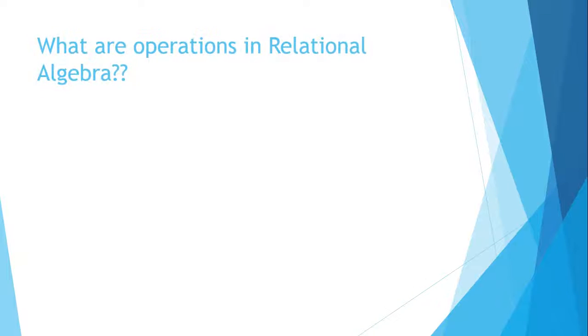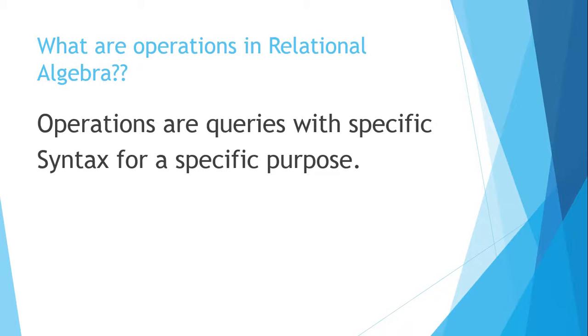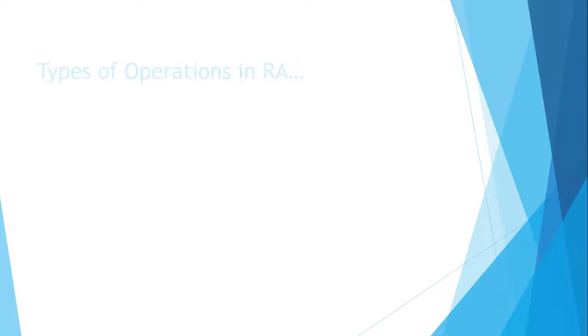What are the operations in Relational Algebra? Operations are the queries with specific syntax for a specific purpose. There are different kinds of Relational Algebra operations and they are categorized into three types. They are Unary operations, Binary operations, and Set theory operations.